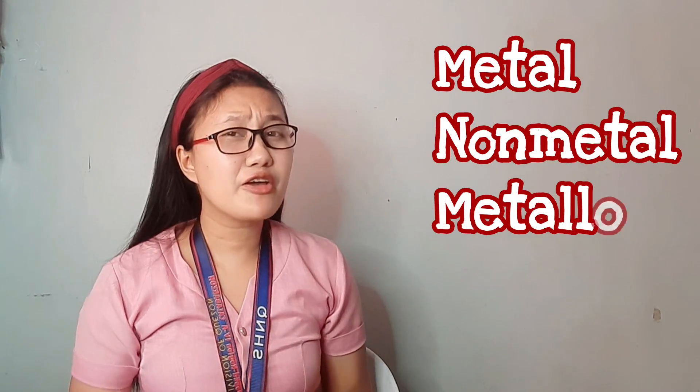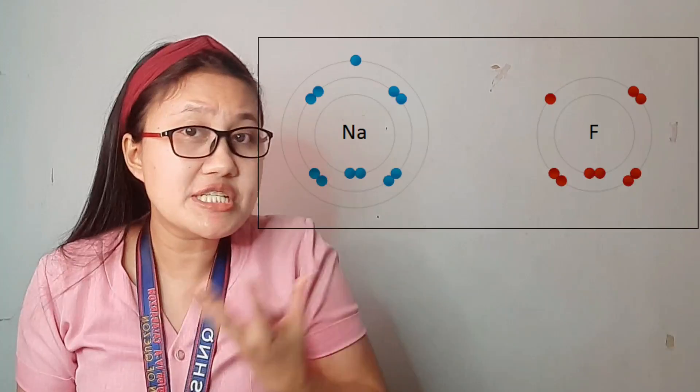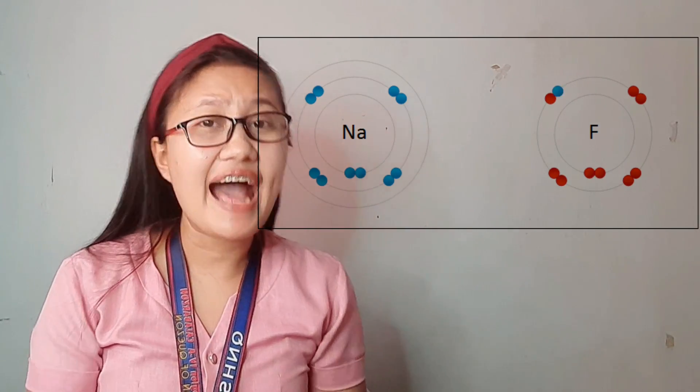Elements are categorized into three: metal, non-metal, and metalloid, and we also have noble gases. These elements are categorized because of their electrical attributes. Some elements lose electrons — they give away electrons — while other elements acquire electrons. When an element loses an electron, it becomes positively charged.